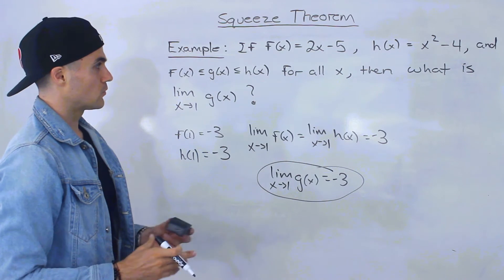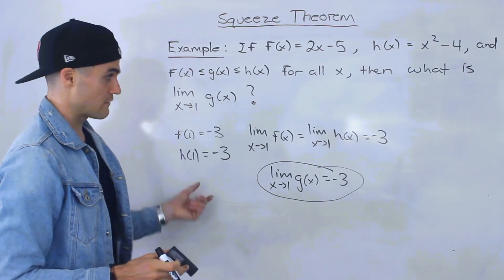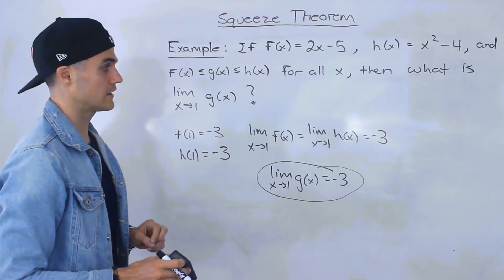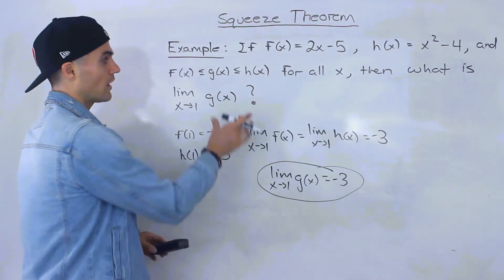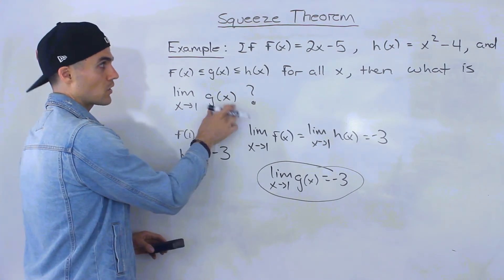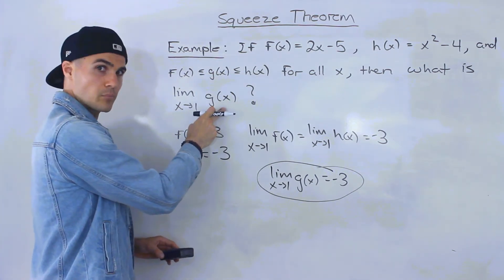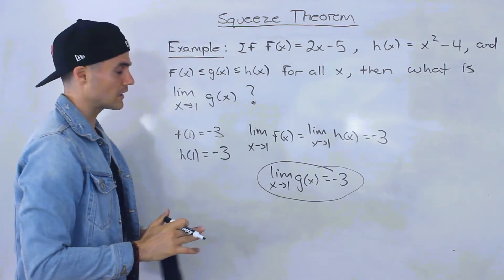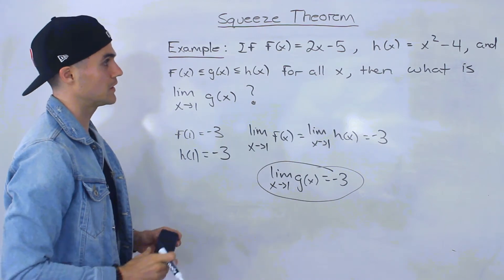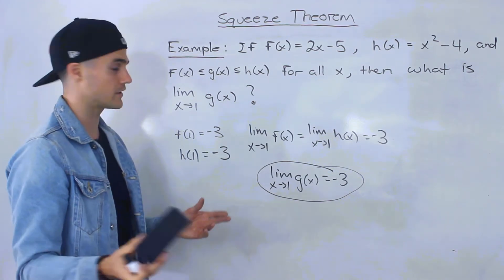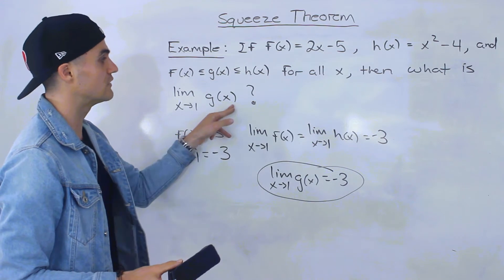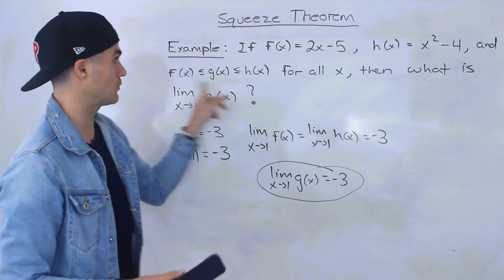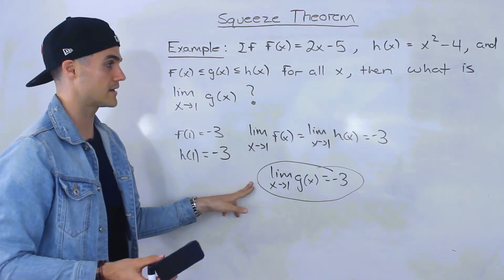That's how to apply the theorem without graphing it — a fairly simple example, but one I wanted to show where we're not given the function g of x. We're also going to be applying the squeeze theorem where we're given complex functions g of x, where working with that limit is going to be a little bit tougher. But I also wanted to start with this example where we don't have to be given g of x: if we're given the bounding functions and both conditions hold, then by the squeeze theorem we know the limit as well.